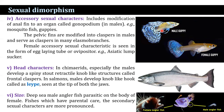In chimaera, especially males develop a spine-like retractable knob-like structure called the frontal clasper. This sort of structure is also observed in forehead brooders. In salmons, males develop a knob-like, hook-like structure called the kype, seen at the tip of both jaws.